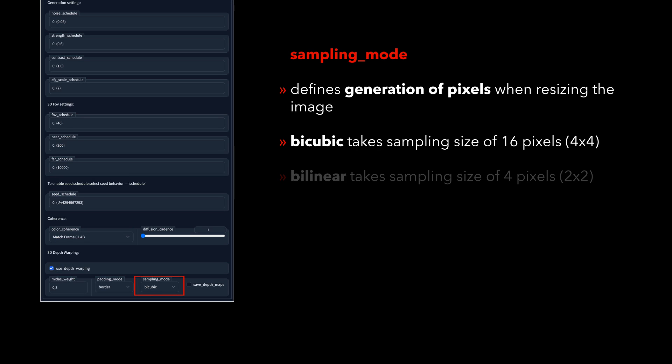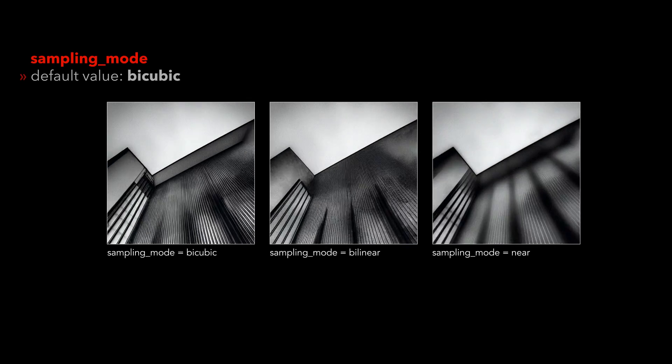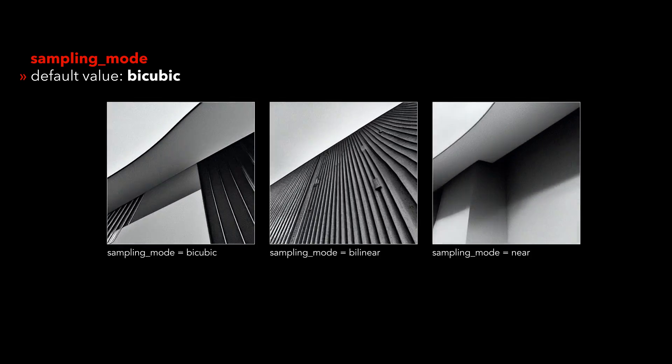Sampling mode defines the interpolation of pixels while resizing the image. Images resampled with bicubic interpolation tend to be smoother and have fewer interpolation artifacts.